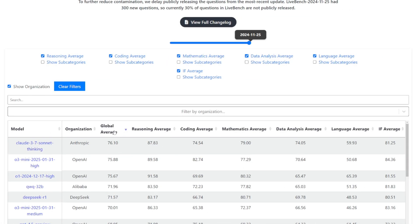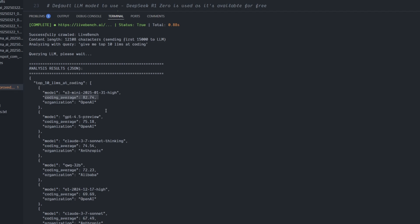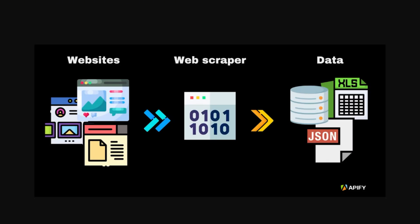Usually when we're scraping or crawling a website, we have the link for it, we have some code that handles the web scraping, and we save the data in a structured format — a file like JSON, a database, XLS, or whatever format you want to use.